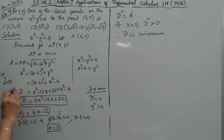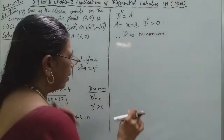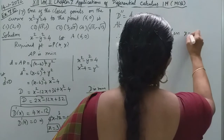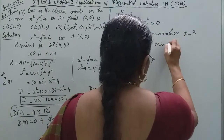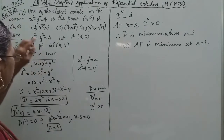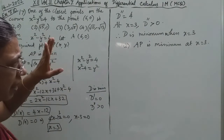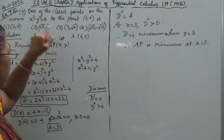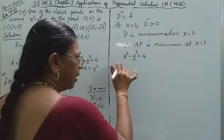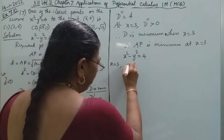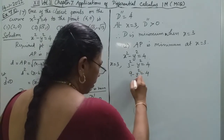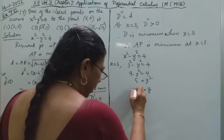So AP is minimum when x equals 3. Substituting x equals 3 into x squared minus y squared equals 4: 3 squared minus y squared equals 4, so 9 minus y squared equals 4, giving y squared equals 5.